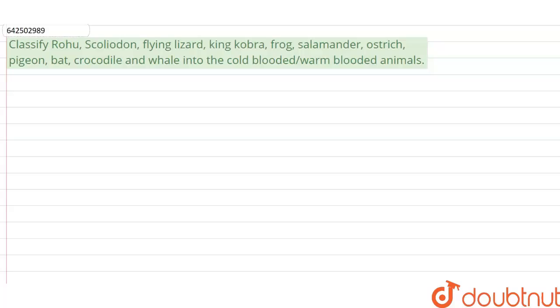In this question, we have been given a list and from this list, we have to classify the animals into cold-blooded and warm-blooded.